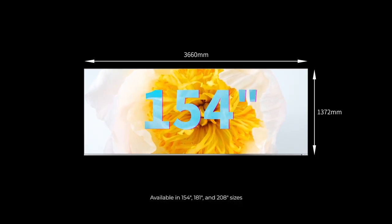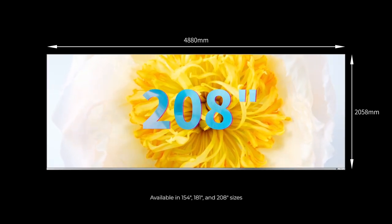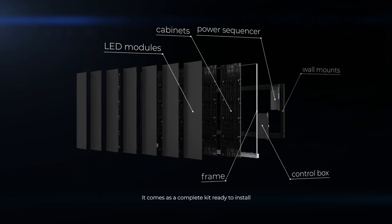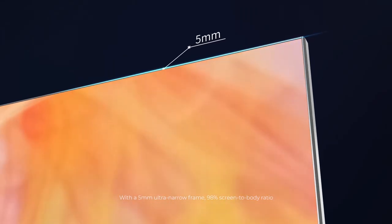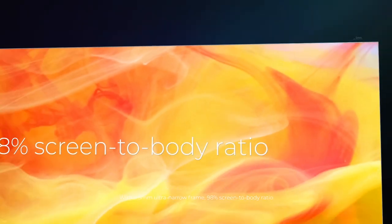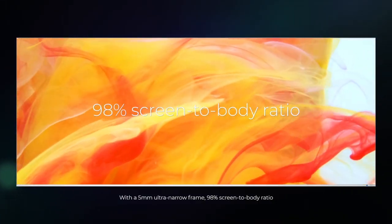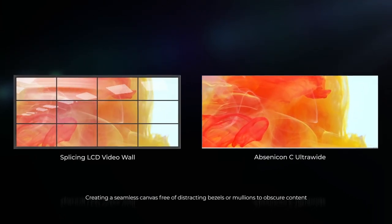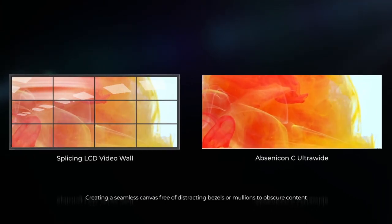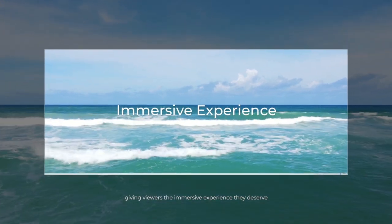Available in 154-inch, 181-inch, and 208-inch sizes, it comes as a complete kit ready to install. With a 5mm ultra-narrow frame and 98% screen-to-body ratio, creating a seamless canvas free of distracting bezels or mullions to obscure content, giving viewers the immersive experience they deserve.